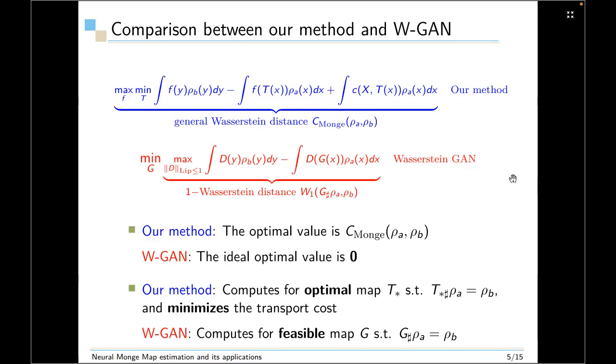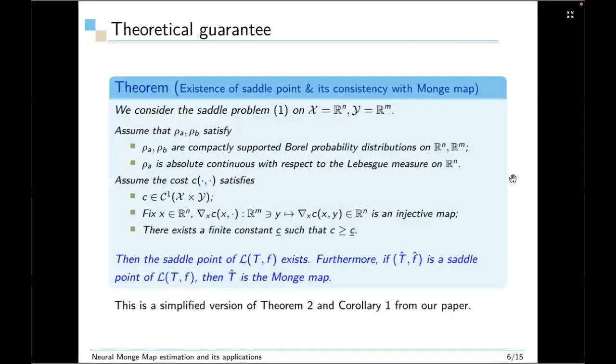Finally, our method computes the optimal map T* such that not only T* push forward ρ_A equals to ρ_B and it also minimizes the transport cost. But for WGAN, it only computes a feasible map such that G push forward ρ_A equals to ρ_B but it doesn't care about the transport cost. Next, we talk about our theoretical guarantee about our method.